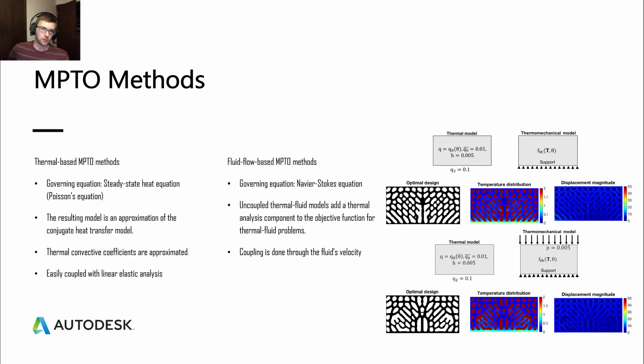When it comes to multi-physics topology optimization methods, specifically ones for thermal fluid, you can have thermal-based methods and fluid flow-based methods. In the thermal-based methods, the governing equation is the steady state heat equation. The model is an approximation of the conjugate heat transfer model and as such, the thermal convective coefficients are approximated. This does let it be easily coupled with linear elastic analysis.